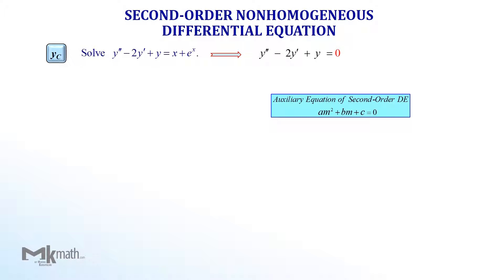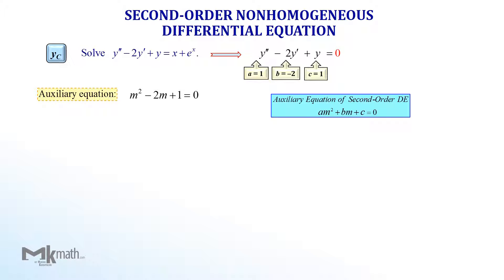Next, make the auxiliary equation from the homogeneous differential equation — am squared plus bm plus c equals 0 — by replacing y double prime by m squared, y prime by m, and y by 1. Since a is the coefficient of y double prime, b is the coefficient of y prime, and c is the coefficient of y, we have a equals 1, b equals negative 2, and c equals 1 in this case. So the auxiliary equation is m squared minus 2m plus 1 equals 0.